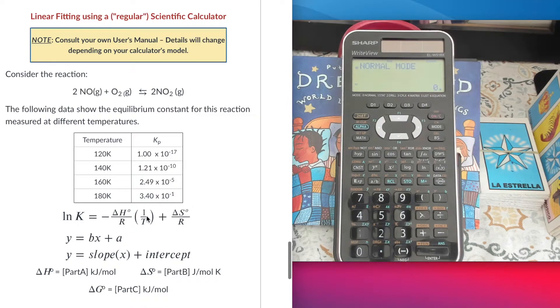In this case, my independent variable is going to be the inverse of the temperature according to the equation appropriate for this problem, and the dependent variable is going to be the natural log of the equilibrium constant.